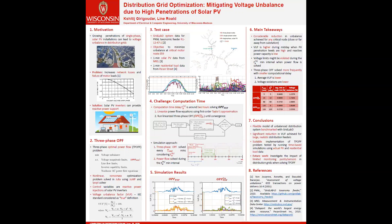As you might know, there has been growing penetration of distributed energy resources like solar PV in the recent past. These solar PV installations are not allocated equally between the phases and there is an uncertainty associated with their power injections. This gives rise to a power quality issue called voltage unbalance.